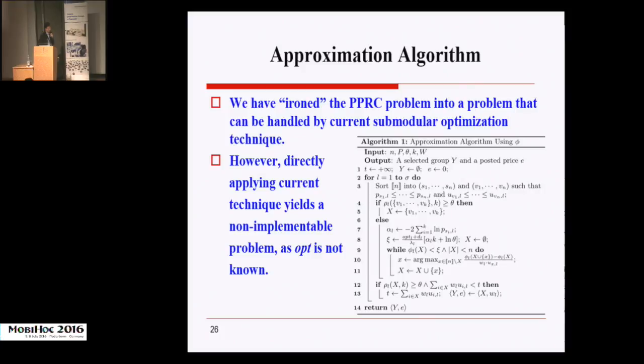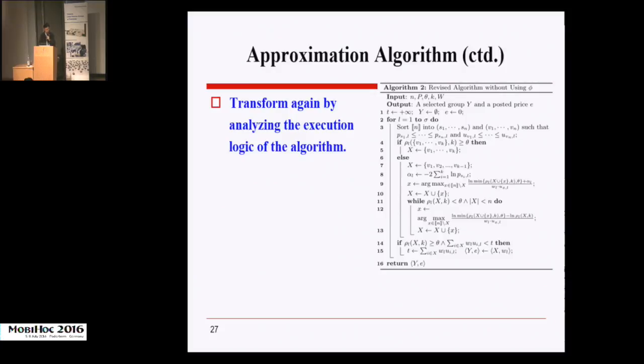The final solution output by Algorithm 1 is the one with the minimum cost for all candidate prices in W. Although Algorithm 1 is clear, it is actually non-implementable because we need to know the value of the optimal solution as shown in line 8. Actually, this optimal value also appears in the surrogate function we proposed.